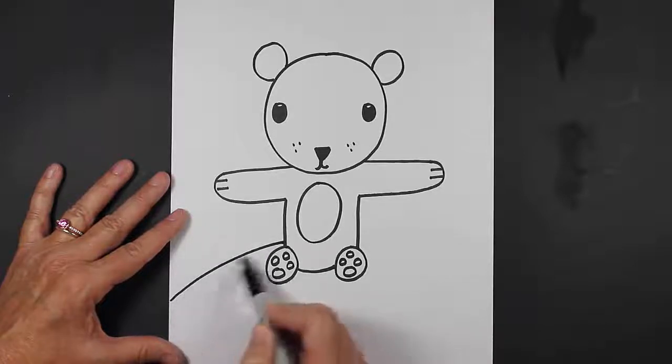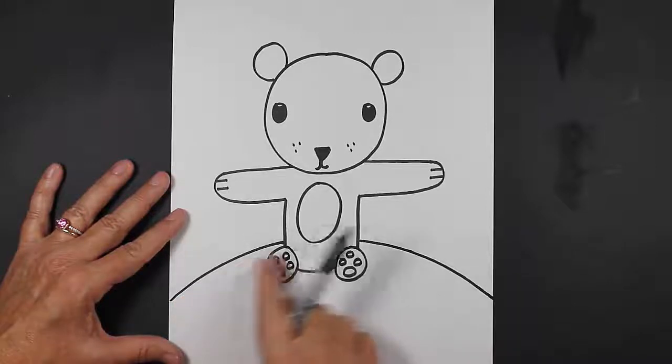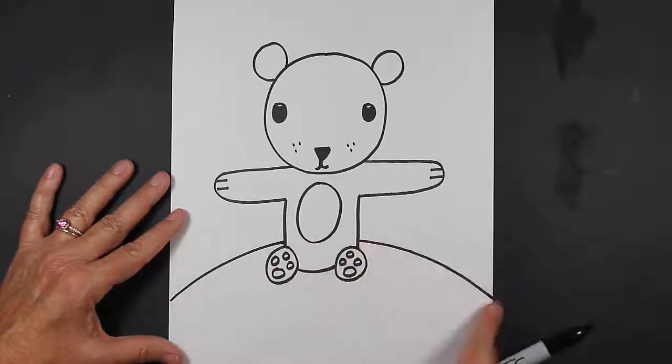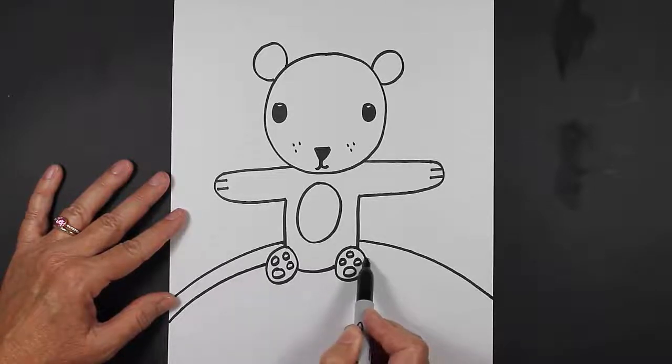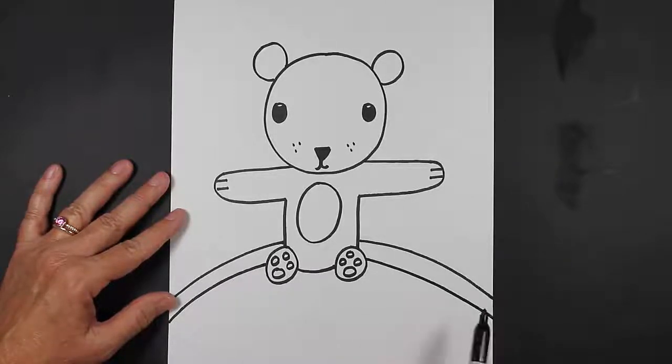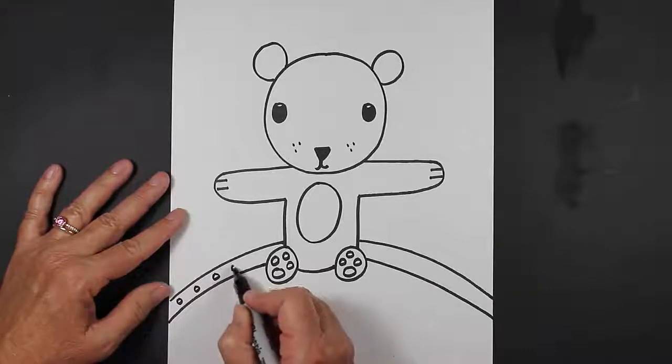So I'm going to make a curved line and then a curved line. Remember when you're making your curved line, you jump over your subject. Now I'm going to make another curved line, jump over just like that. Maybe I'll put some decorations here on my rug.